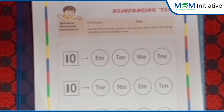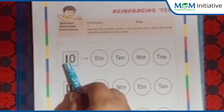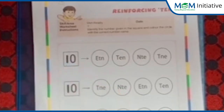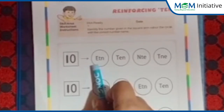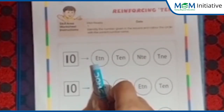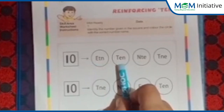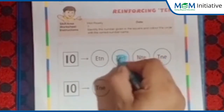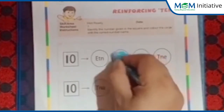Let's start the first worksheet. This is number 10. Now tell me, is this the correct spelling of 10? No. Is this the correct spelling of 10? Yes! So let's color it like this.